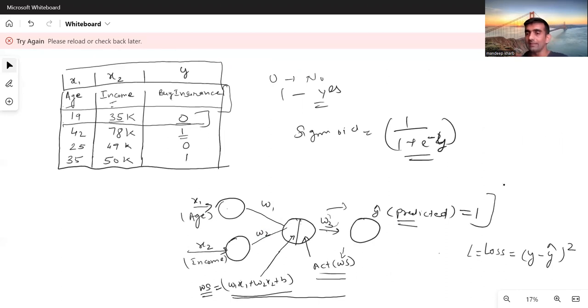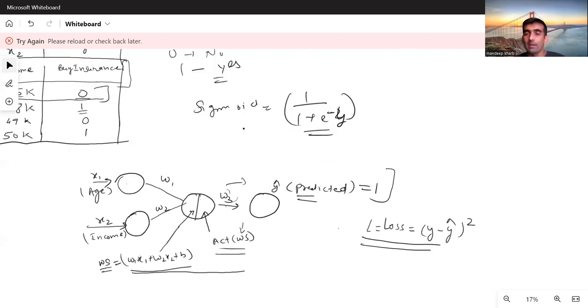Whatever the model predicts, the next step in forward propagation is to calculate the loss. Loss is basically that calculation in which we try to find out how much is the gap between the actual and the predicted. There are different types of loss functions; the general one used here is (y minus y_hat) whole square.